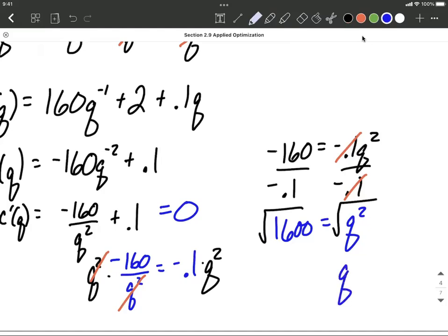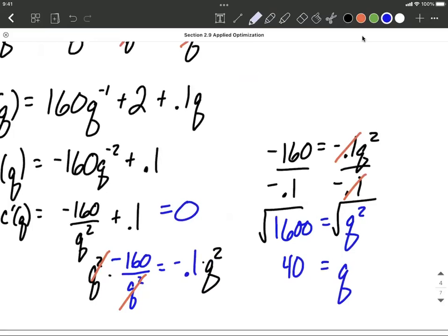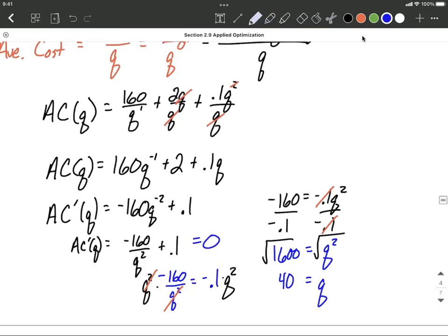I'm not worrying about the positive and negative in this case, and I'll tell you why. Because Q stands for quantity. It doesn't make sense that you would be manufacturing a negative quantity. We're looking at average cost. You wouldn't manufacture a negative quantity. So our ideal value, we're thinking this critical value of 40.